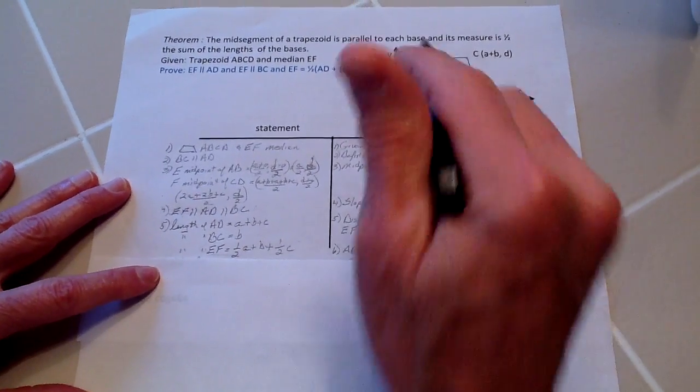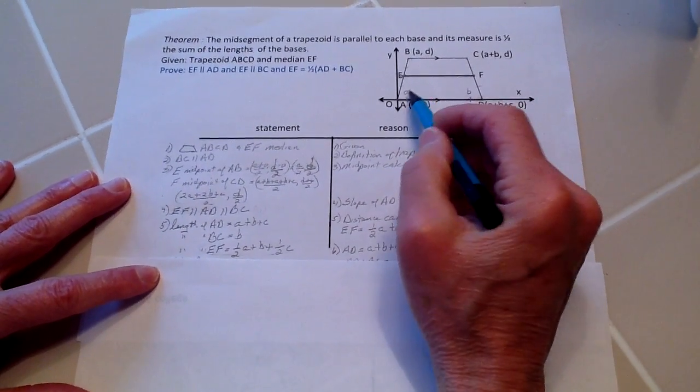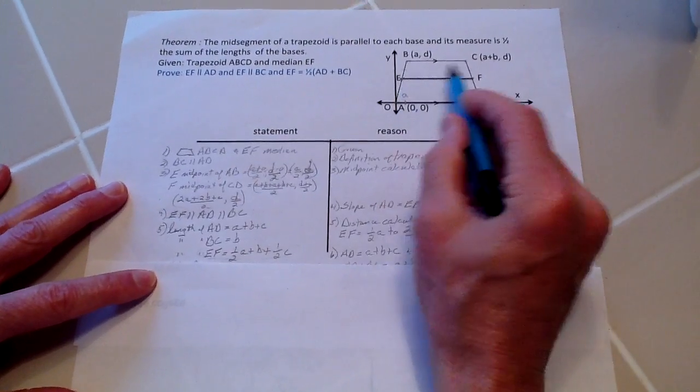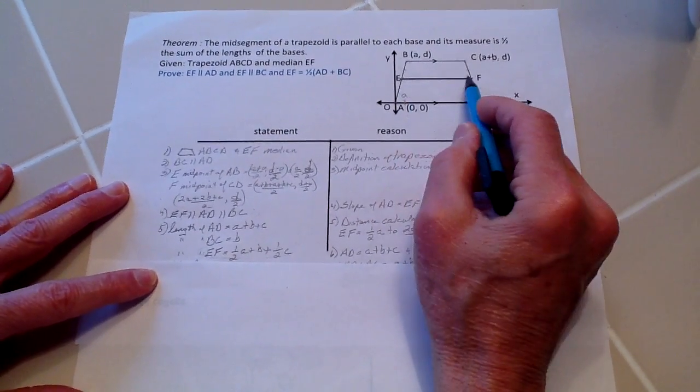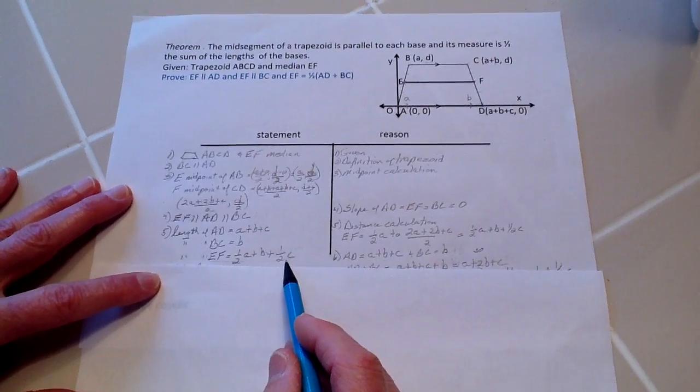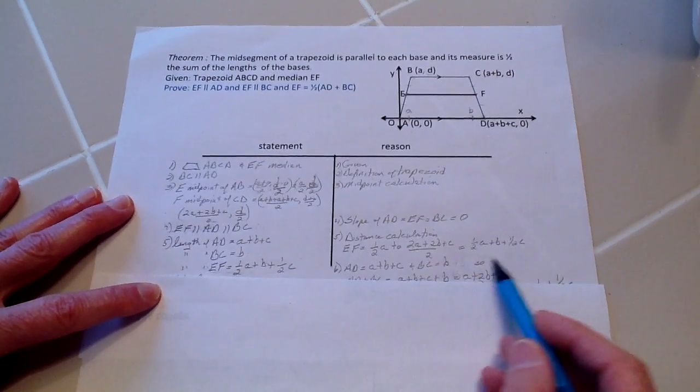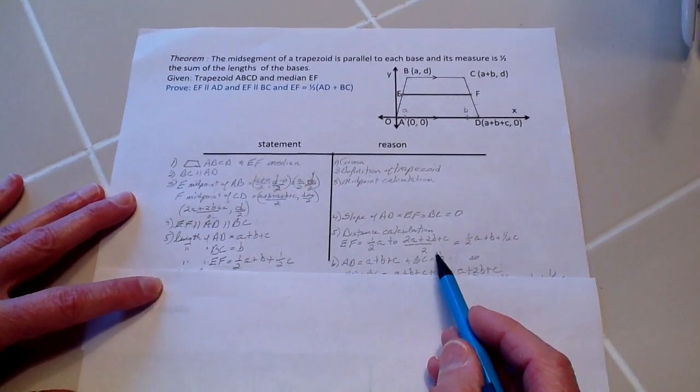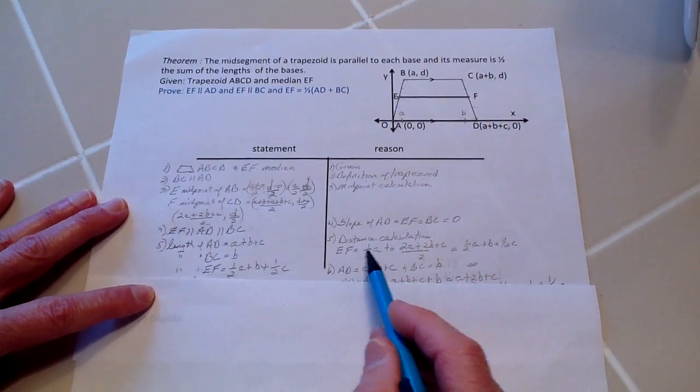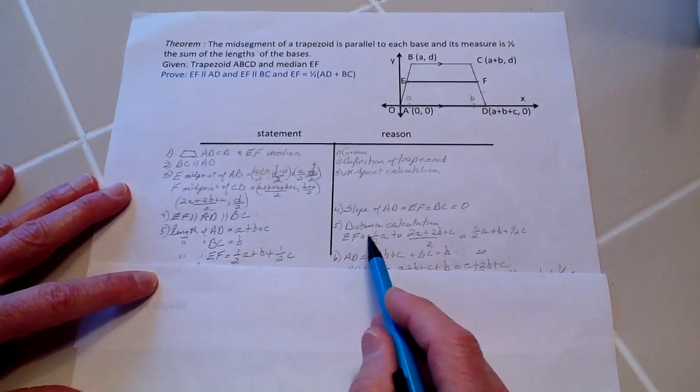And then the length of EF, remember we started at one-half A. Then we have to add B over there and then one-half of C. And so what we're doing on that aspect is using the distance formula or distance calculation.